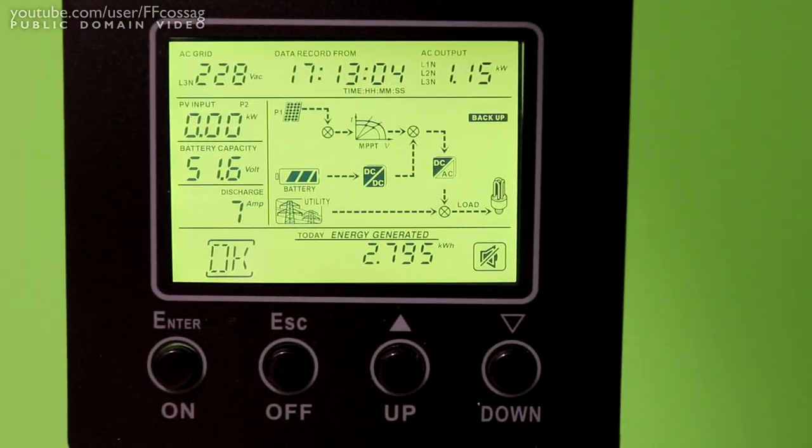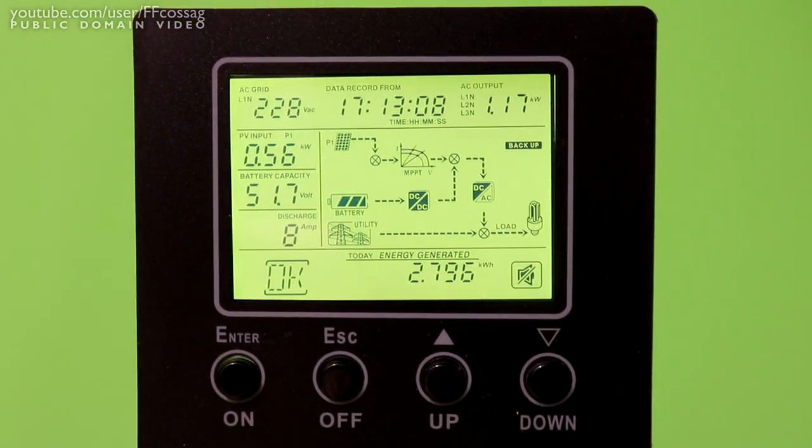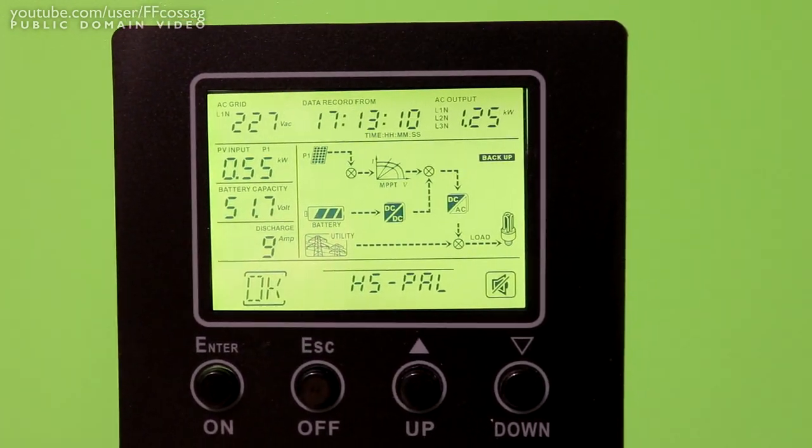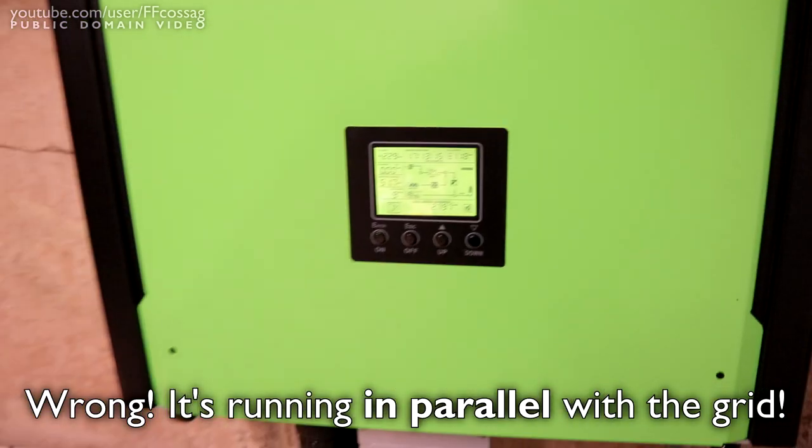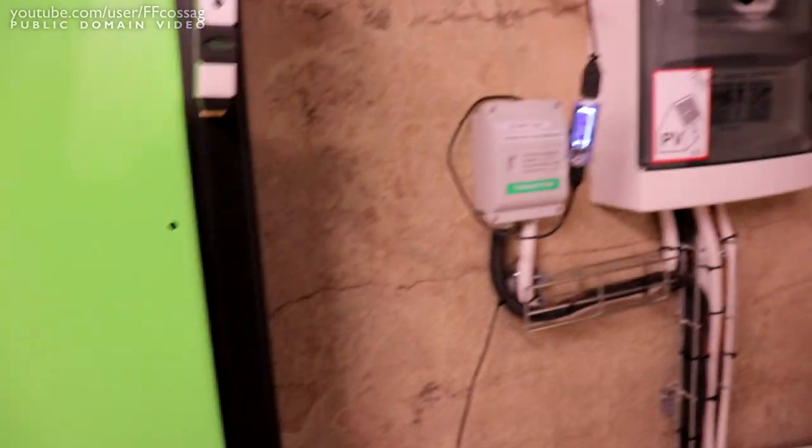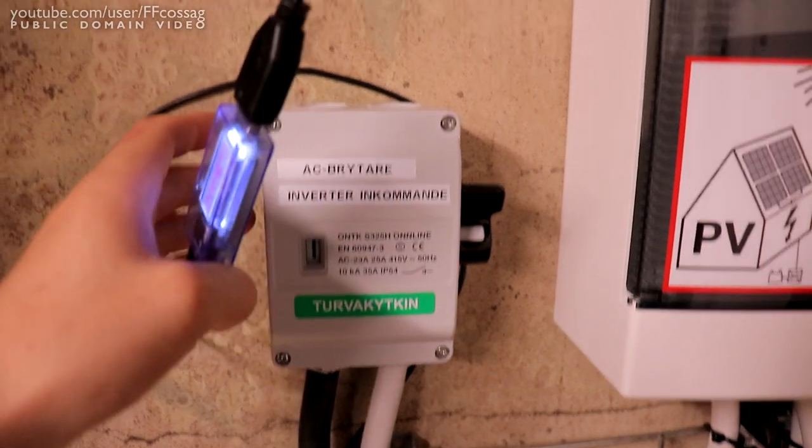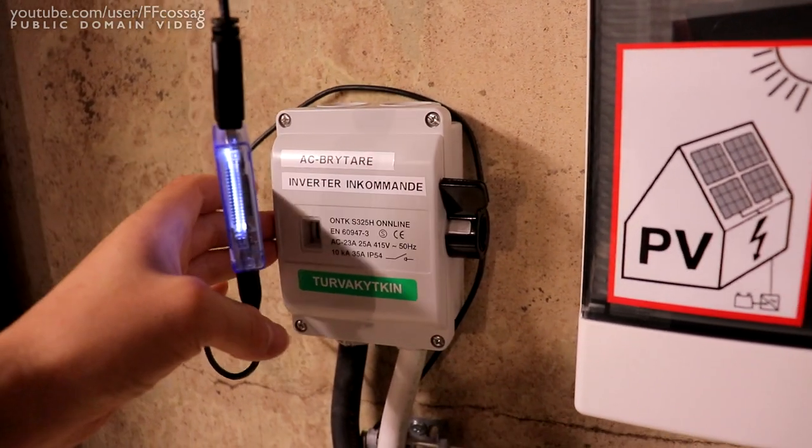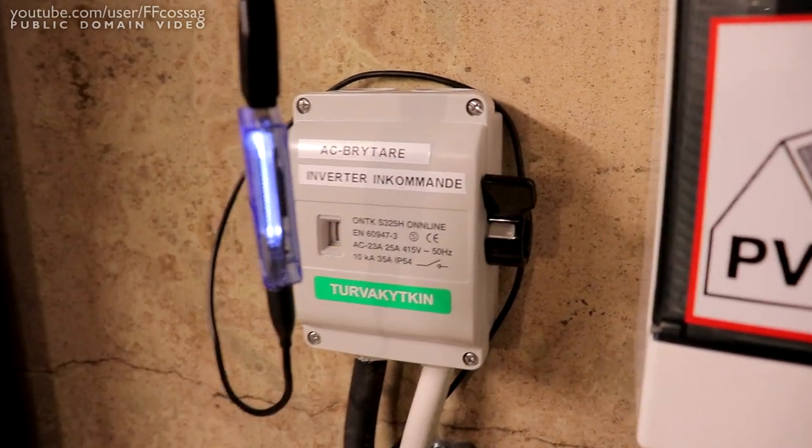So as you can see, I've set this up to run with batteries as the primary power source. So we're actually off grid now, and I'm not entirely sure actually how it's going to behave, if we shut off our Turvakytkin, which is our main safety breaker for the inverter. This is incoming mains. So let's see what happens.